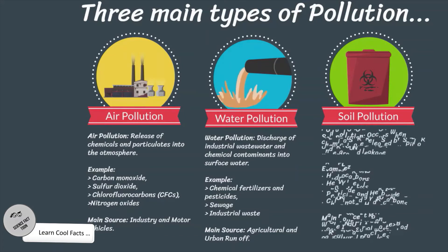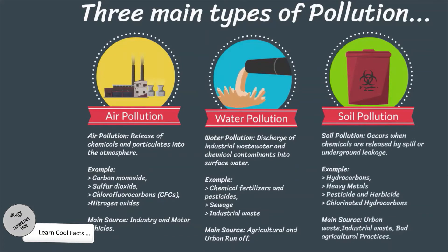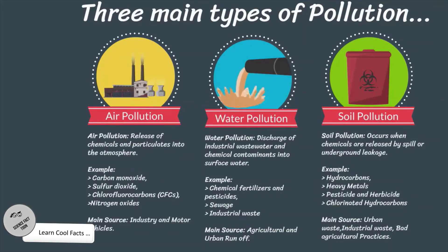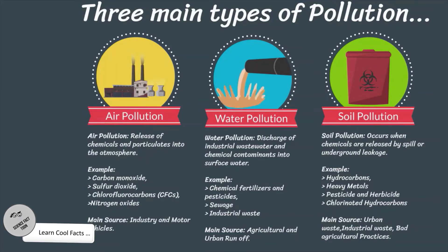Soil pollution occurs when chemicals are released by spill or underground leakage. Examples include hydrocarbons, heavy metals, pesticides, herbicides, and chlorinated hydrocarbons. The main sources are urban waste, industrial waste, and bad agricultural practices.